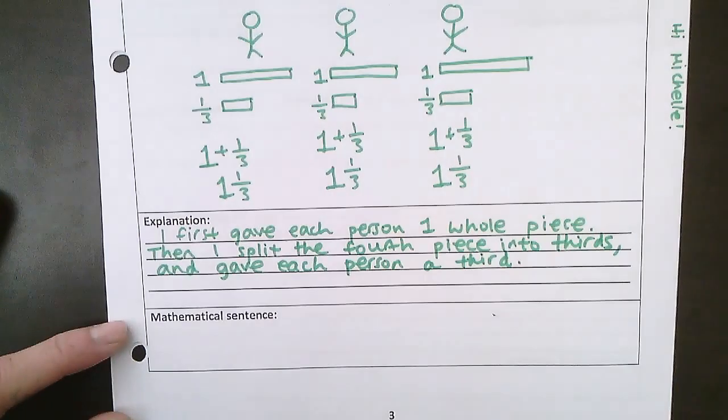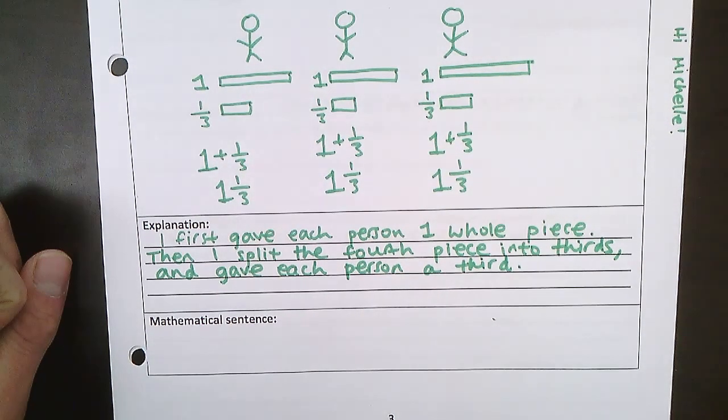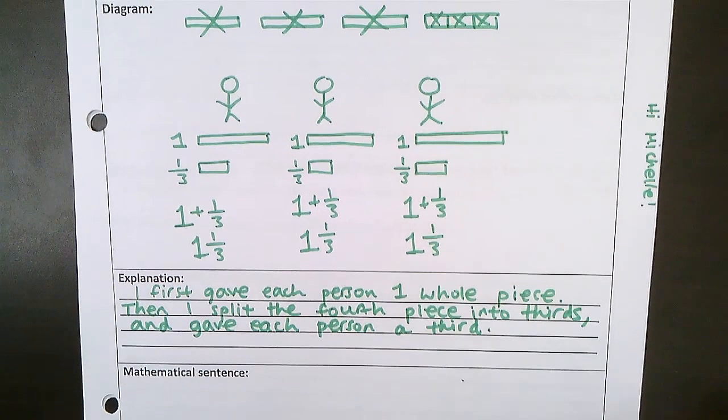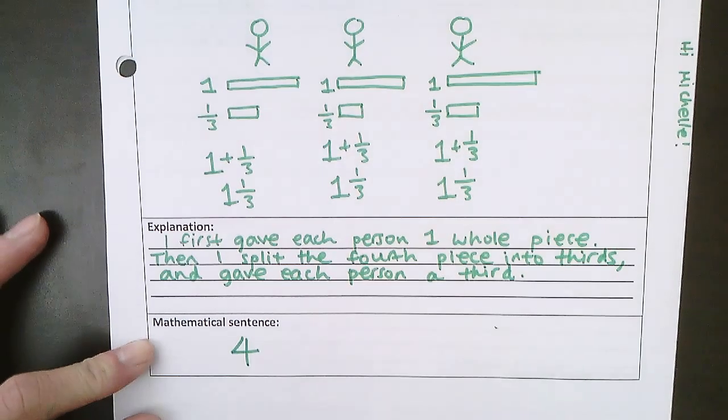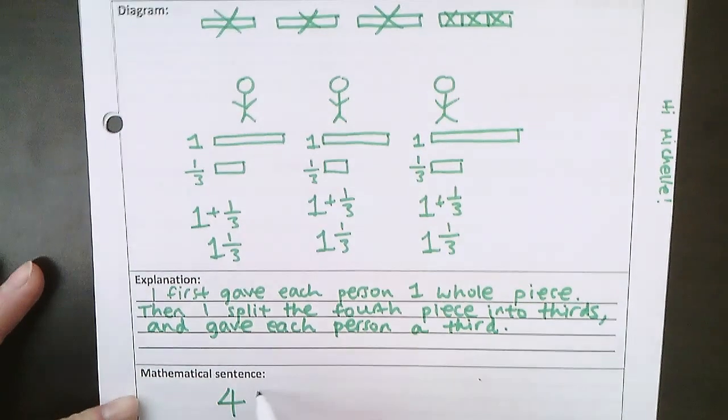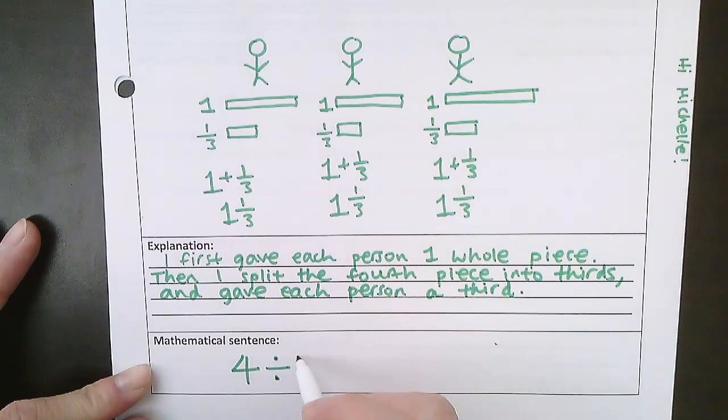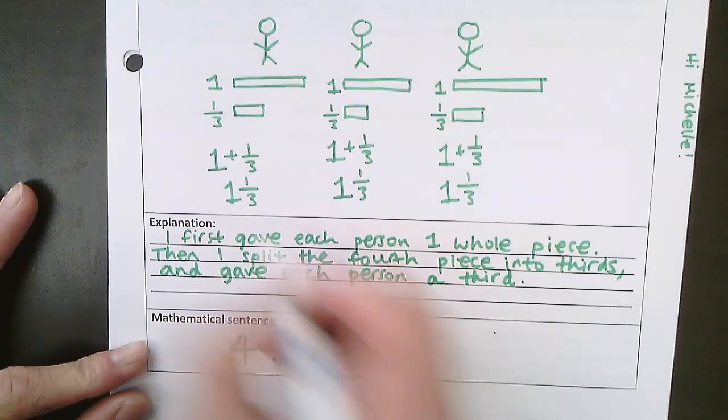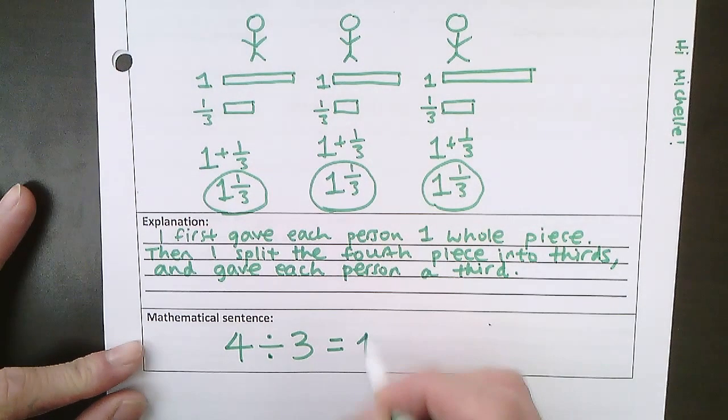Last part. I'll give you a few more seconds to write all this down. For the mathematical sentence, you're going to write out what we did with numbers and symbols. So we started with four pieces of licorice. Then we divided these four pieces. So we divided into three people. So four divided into three equal parts. And each equal part had one and one third. So four divided by three is one and one third.